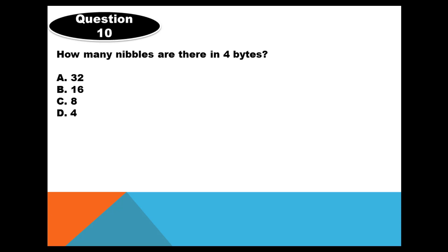Question 10. How many nibbles are there in 4 bytes? A. 32, B. 16, C. 8, D. 4. Five seconds to answer this question. The answer is C. There are eight nibbles in 4 bytes. A nibble is half a byte. So, four times two is eight. Totally there are eight nibbles in 4 bytes.